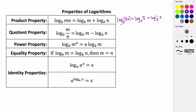This would be applying the product property. And this actually works in the other direction as well. If you were given a sum of two logs with the same base, then you could combine them together to get a single log by using the product property.